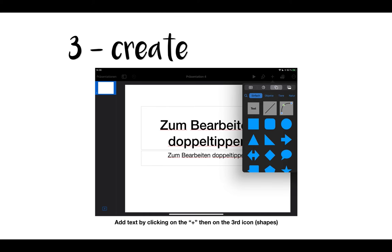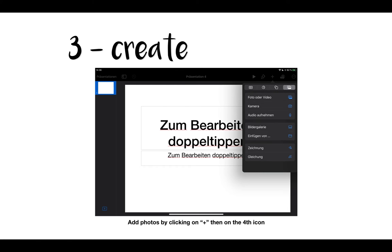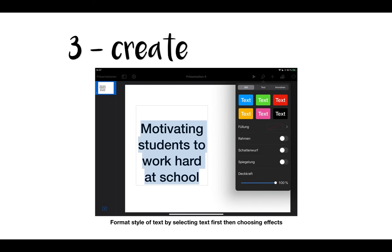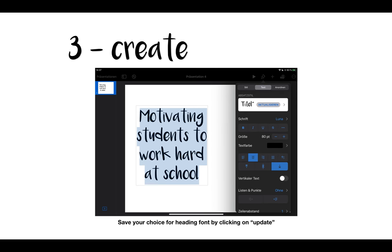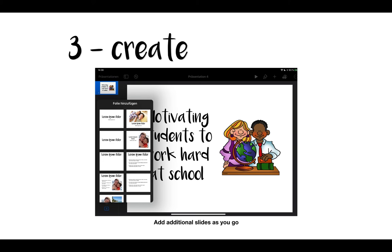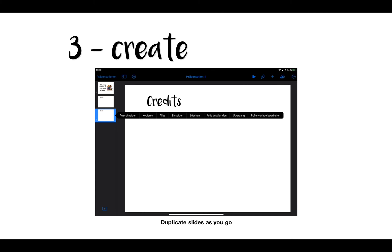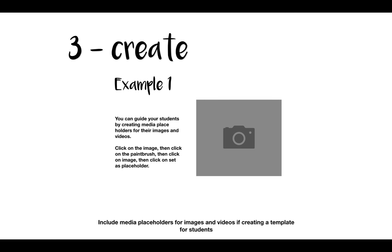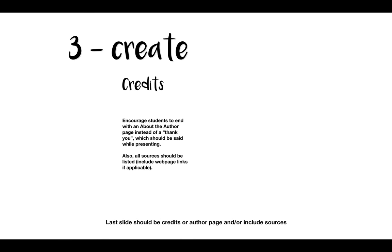Creating presentations in Keynote is really simple: you click the plus button, add your elements — you can add text, add images, format your text, and even save the formatting style by clicking Update. You can balance your elements on the page, add slides through the dialog box, or duplicate them, which is what I usually do as I build as I go. When creating a template for students, I usually create media placeholders to guide them, and I instruct them to close their presentation by including a credits or author page.